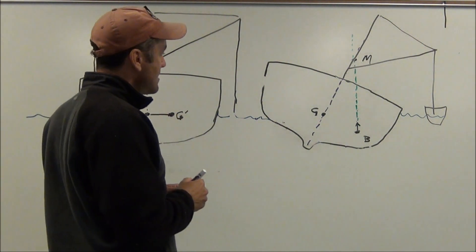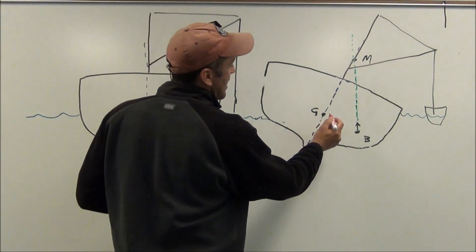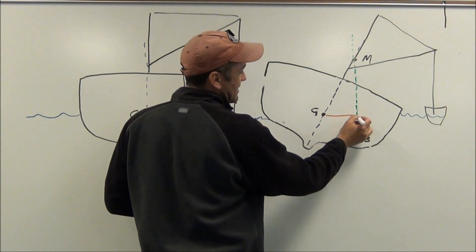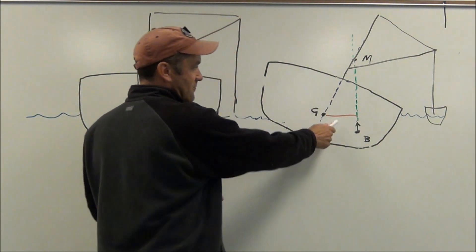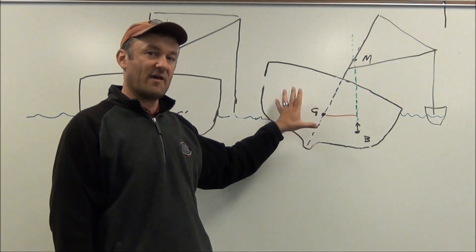What that does to our righting arm, I can point out. This is our righting arm before we shifted the center of gravity here. This red line is our righting arm. That's the arm that's trying to make the vessel go back upright.